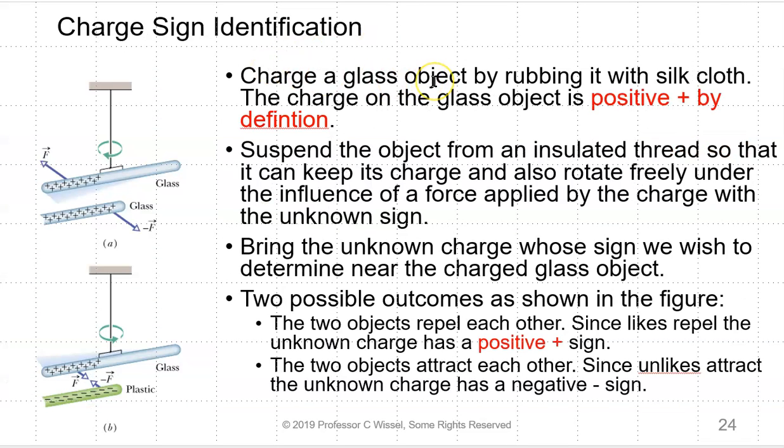We're going to charge a glass object by rubbing it with a silk cloth. The charge on the glass object is positive by definition. If we suspend the object from an insulated thread so it can keep its charge and also rotate freely under the influence of a force applied by an unknown charge, we bring the unknown charge whose sign we wish to determine near the charged glass object. There are two possible outcomes. Either they will repel each other. If they repel each other, they're like charges. That means that the unknown is positive. Or they will attract each other. They are unlikes. Unlikes attract. So the unknown charge has the negative sign. This only works with charged objects. It does not work with neutral ones.